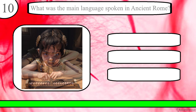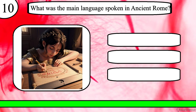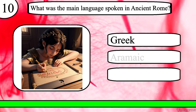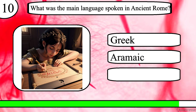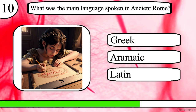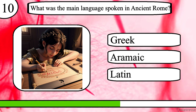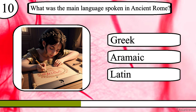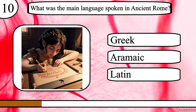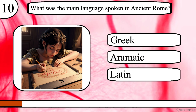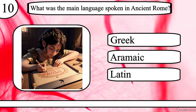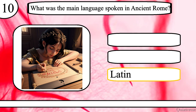Question 10. What was the main language spoken in ancient Rome? Greek, Aramaic or Latin? The correct answer is Latin.